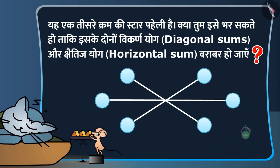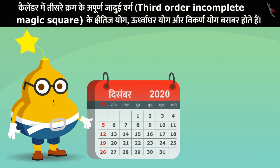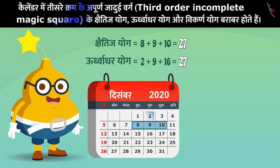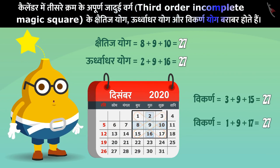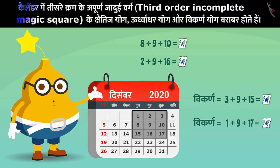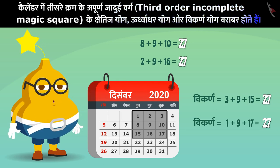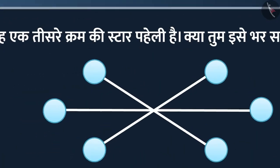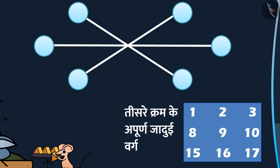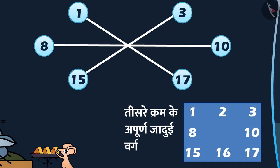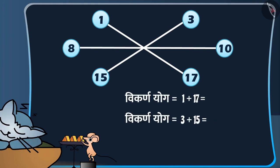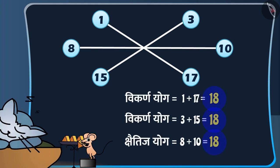तभी कुछ सोच विचार कर फ्रूटी बोलता है: हम जानते हैं कि एक कैलेंडर में तीसरे क्रम के अपूर्ण जादूई वर्ग यानि थर्ड ओर्डर इनकम्प्लीट मैजिक स्क्वेर के 36 योग, ऊर्ध्वाधर योग और विकर्ण योग बराबर होते हैं। तो यहाँ इस स्टार को भरने के लिए हम तीसरे क्रम के अपूर्ण जादूई वर्ग की केंद्रीय संख्या यानि सेंट्रल नंबर को छोड़ कर बाकी सभी संख्याओं का उपयोग कर सकते हैं। अब तुम देख सकते हो की दो विकर्ण योग और एक 36 योग बराबर हैं।